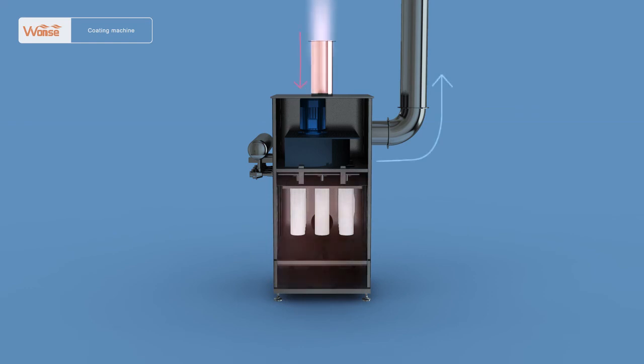Under the action of the explosion-proof centrifugal fan, the tail gas containing dust in the drum will enter the air exhaust cabinet through the air pipe that connects with the air exhaust cabinet, and will be discharged outdoors after going through the pulse backflush bag dust removal system, so as to meet the emission standard.